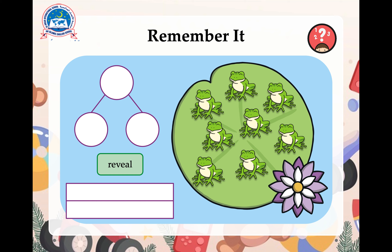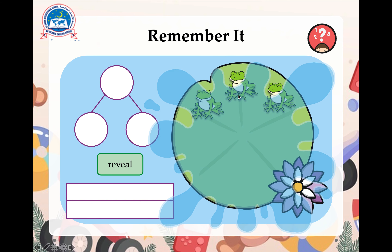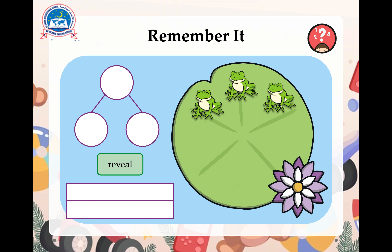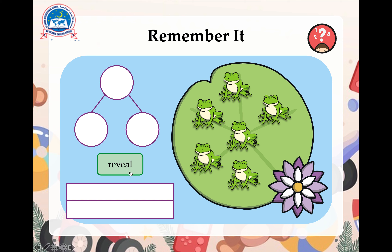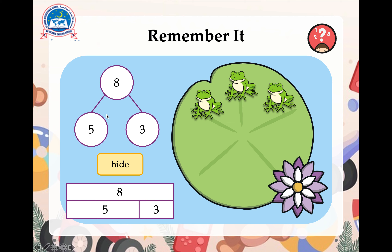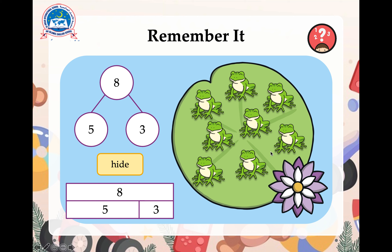Let's try this one. Here we have 8 frogs on one lily pad, and 1, 2, 3 on another. So we have 8 and 3. If 5 of them are missing — well done! Because first we had 8 of them, a few jumped off and then we've got 3. So 5 of them are missing. So 5 and 3 make 8.